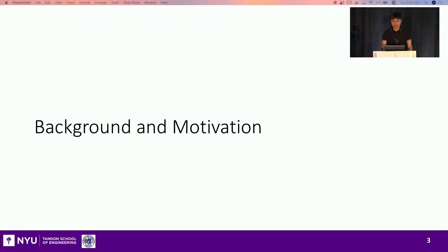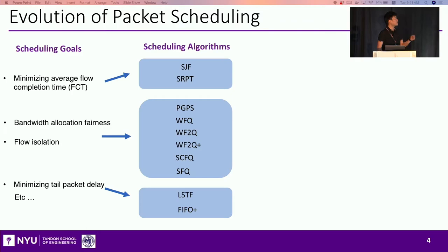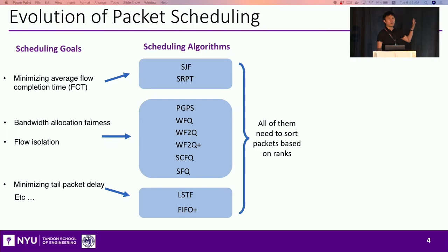Let's start with the background and take a look at the evolution of packet scheduling. Starting from the early 90s, people have been working on packet scheduling algorithms for different goals, including minimizing flow completion time, providing weighted maximum fairness on bandwidth, and minimizing tail packet delay. For each different purpose, academia has come up with multiple scheduler algorithms. Among most of them, the logic is to calculate a scheduling order for each packet and assign that order as a rank. The scheduler then sorts those packets and serves them in escalating order.